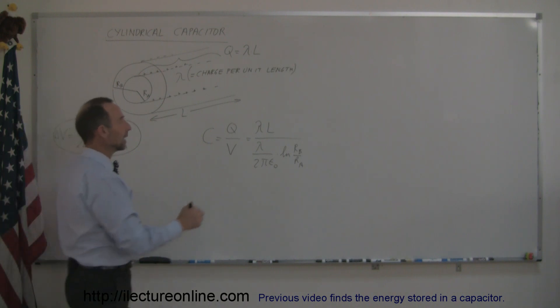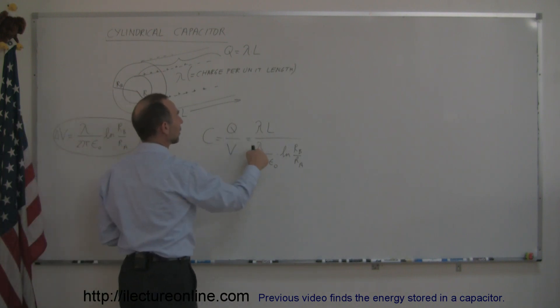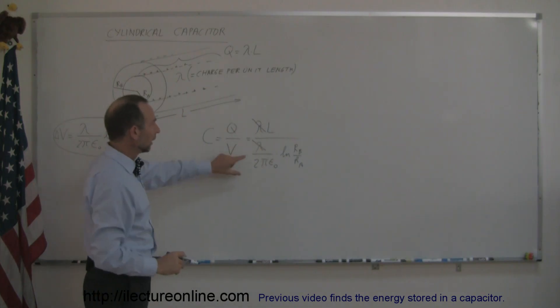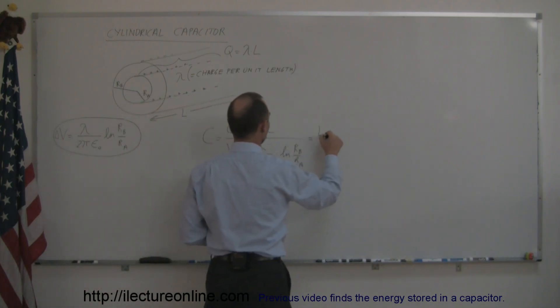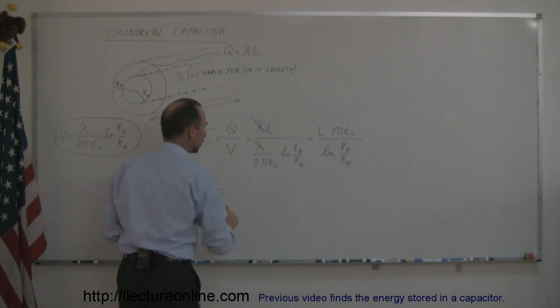Then right away you see that you have a lambda in the numerator, and a lambda in the denominator, so they would cancel each other out. When we divide by 1 over 2 pi epsilon sub nought, that moves into the numerator, so we can write this as L times 2 pi epsilon sub nought, divided by the natural log of Rb over Ra.